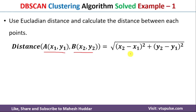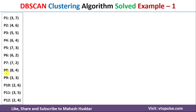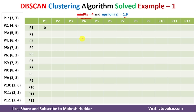We need to use this formula to calculate the distance between each data point, and once we calculate the distances we will try to form the clusters. These are the data points given to us. The minimum points within a cluster should be 4 and the distance between each data point within a cluster should be less than or equal to 1.9.